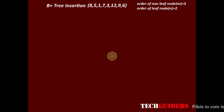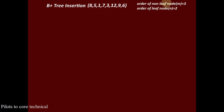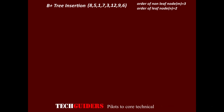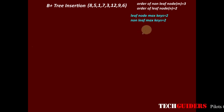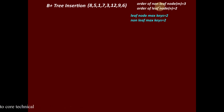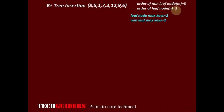Let's consider an example for B+ tree insertion. Let the order of the non-leaf node m equal 3 and the order of the leaf node n equal 2. In a B+ tree, the order of the leaf node may be different from the order of the non-leaf node. Since m equals 3, the maximum number of keys in a non-leaf node is m minus 1, which is 2. Since n equals 2, the maximum number of keys on a leaf node is also 2.